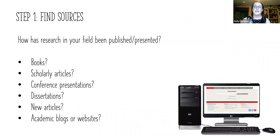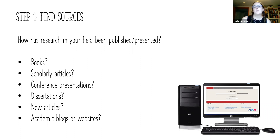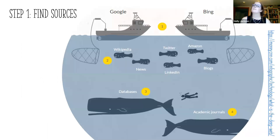Step one: finding your sources. How has research in your field been published or presented? Is it in books, scholarly articles, conference presentations, dissertations, news articles, academic blogs or websites? Is it in primary resources? Is it in artwork or music pieces? Figure out exactly what you're going to need as you put together your research, and then go out and find them.